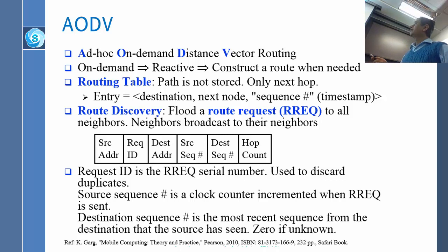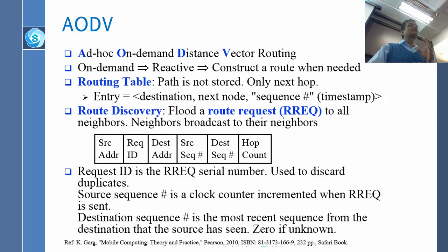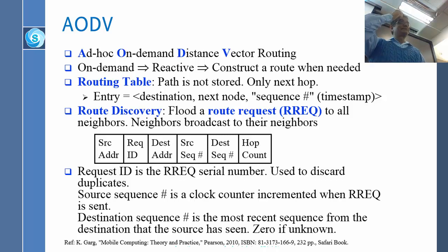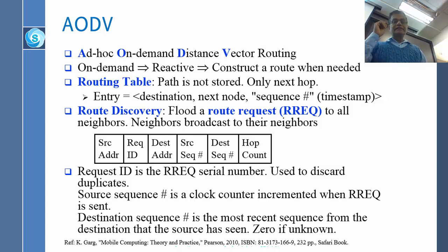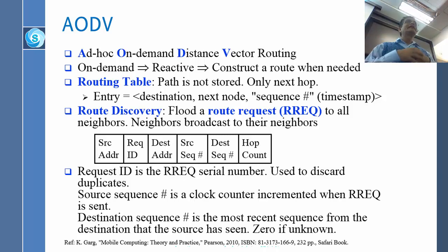There are several words here. Ad Hoc, second thing is On Demand, and then Distance Vector. Some of you may remember Distance Vector, some may not. Distance Vector is one kind of routing — in 470 we teach about routing. Another one is called Linked State. On Demand means the route is prepared when we need it. If I don't need to talk to him, I don't need the route for him. If I need it, then I need to figure out how to get there. On Demand.